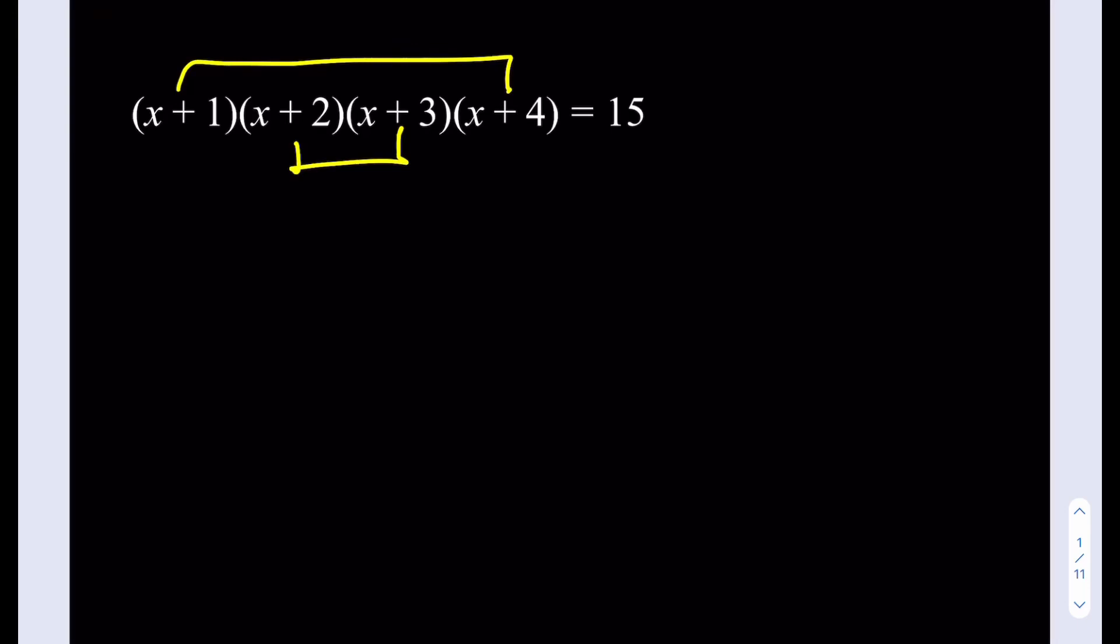Okay, so let's multiply (x + 1)(x + 4). That's going to give me x² + 5x + 4. And then the terms in the middle are going to give me x² + 5x + 6 and the product is going to equal 15. Awesome. Now, what is good about doing this? Well, the good thing about doing it this way is we get the same middle term. We are getting the 5x twice.